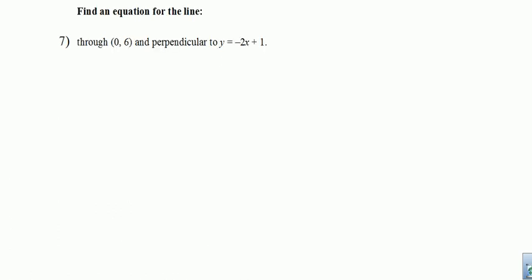Number seven asks us to find the equation of a line. In this case, we're going to go through zero six. And we're going to be perpendicular to y equals negative two x plus one. We should know that perpendicular lines have slopes that are opposite reciprocals. So the slope that I'm looking for is not negative two. It's the opposite reciprocal. So it will be positive. And if we flip the two over, we get one half. So the slope is one half.